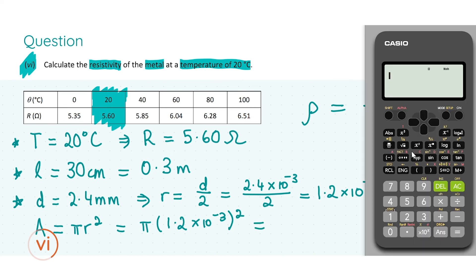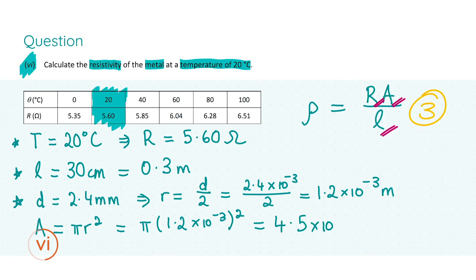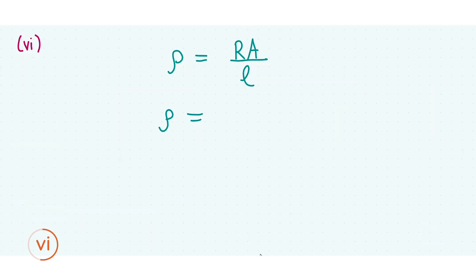Here is our answer: cross-sectional area of roughly 4.5 times 10 to the power of minus 6 meters squared. Figuring out the area gets you three marks. Now, rewriting the resistivity formula, we can sub in our values to determine the resistivity: 5.60 ohms for the resistance, 4.52 times 10 to the power of minus 6 for the area in meters squared, and 0.3 for the length of the wire, also in meters.